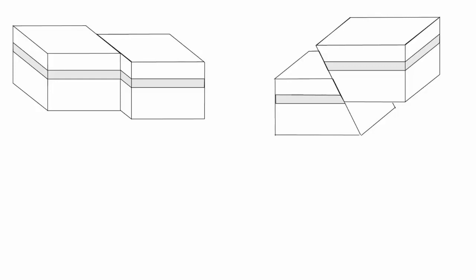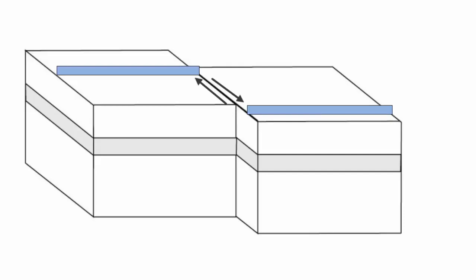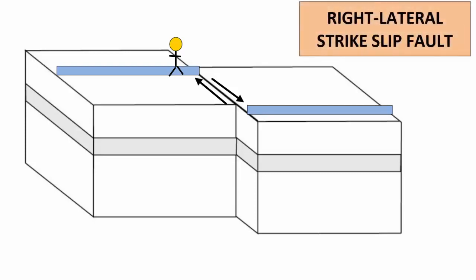How can you identify the type of fault just by looking at it? If we're trying to classify a strike-slip fault, we can see relative motion only from a map view — we must look from above. Find an object like a fence, rock layer, or riverbed that was split apart by the fault movement. Draw relative motion arrows along and parallel to the strike of the fault plane, showing the motion of each side relative to the other. Now imagine standing on one side of the fault and looking across to the other side — which direction did the other portion of your feature move? To your right or left? If right, it's a right-lateral strike-slip; if left, it's a left-lateral strike-slip. Notice that you should get the same answer no matter which side of the fault you are looking from.